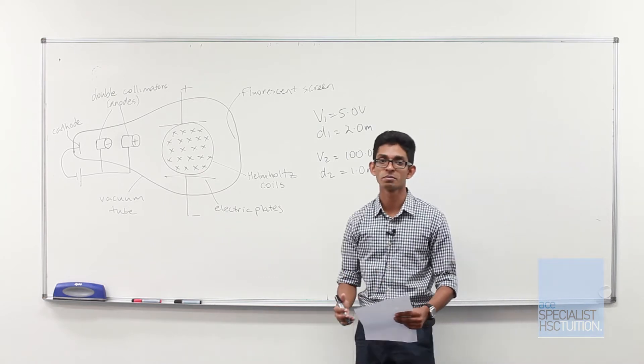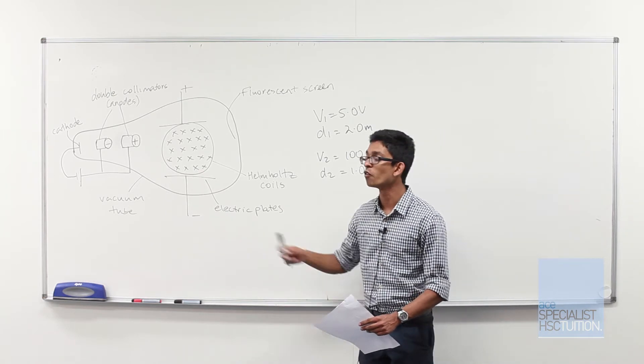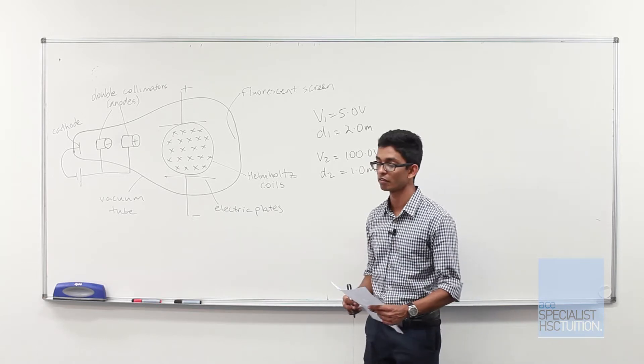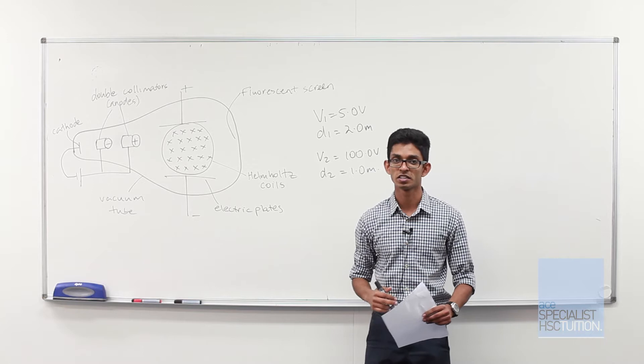Now what we need to do, just as Thomson did, is to equate the force on the electron due to the electric field to the force due to the magnetic field. Now I'll just write up the equations for that.